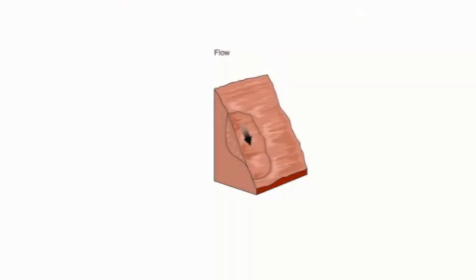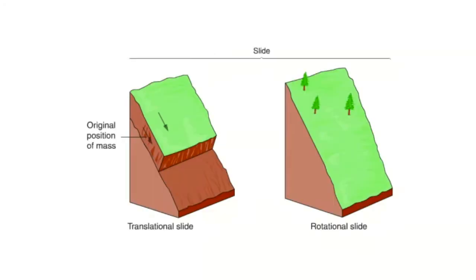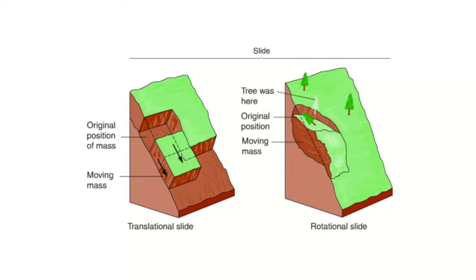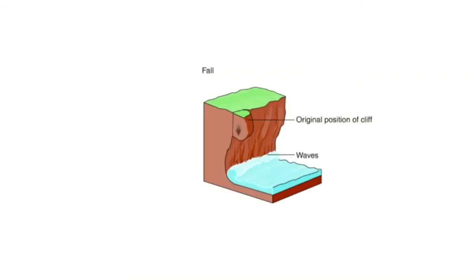Let's look at how these features form. You can see there's a sliding, a slumping, and this is how mass wasting then occurs.